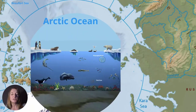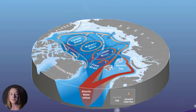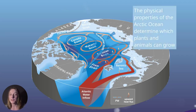Today I want to introduce you to marine food webs of the Arctic Ocean. In previous modules you've learnt about the physical environment of the Arctic Ocean, including the ocean currents, the temperature, the salinity and the sea ice. These environmental factors all work together to control the biology of the marine Arctic — what can grow there and when.